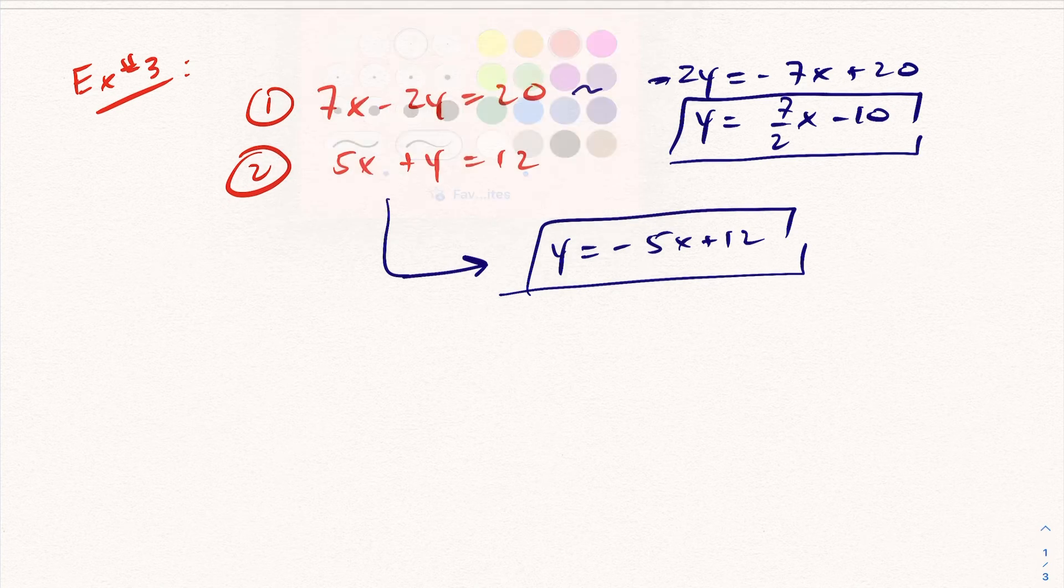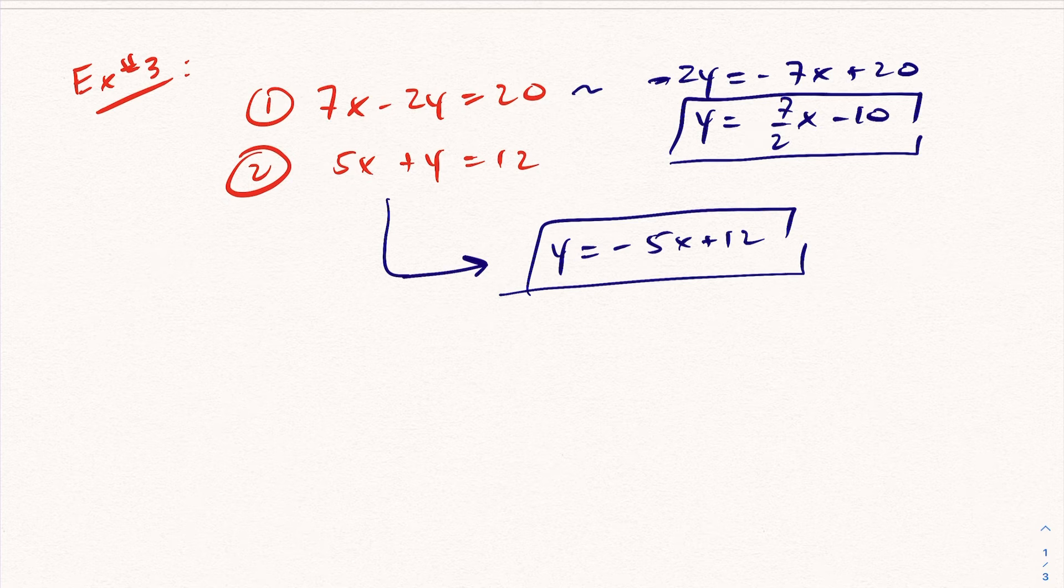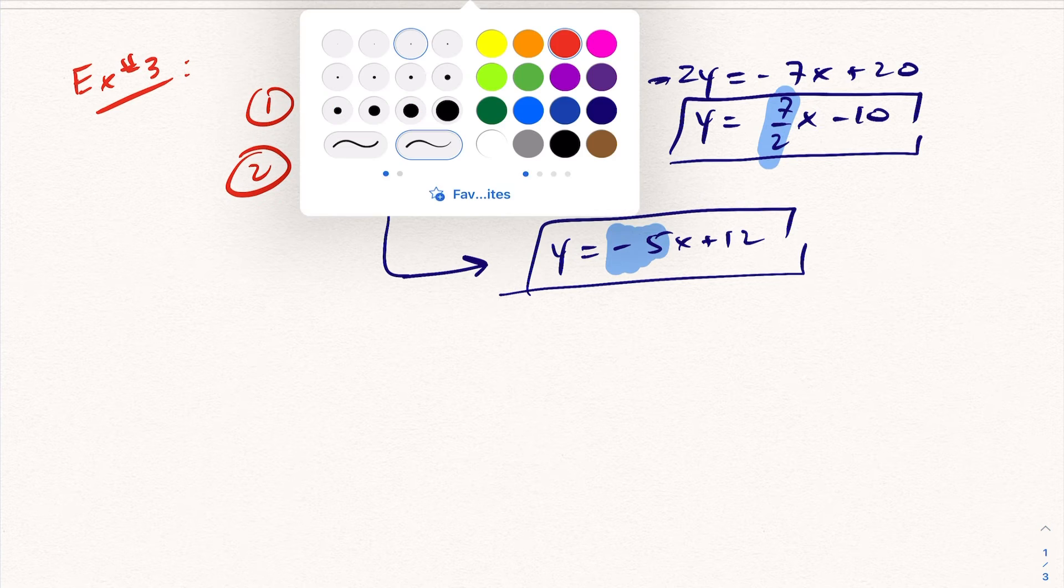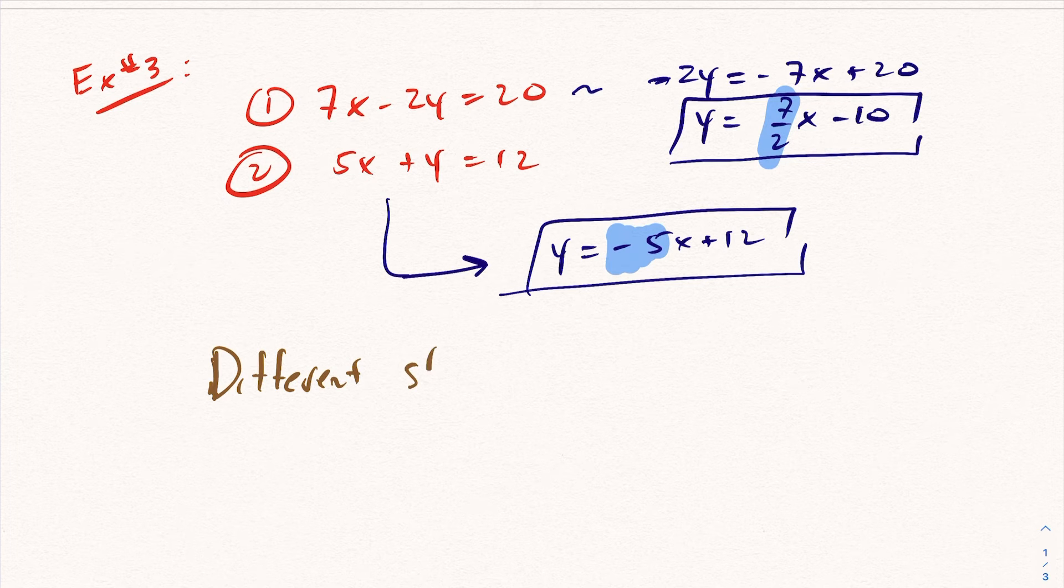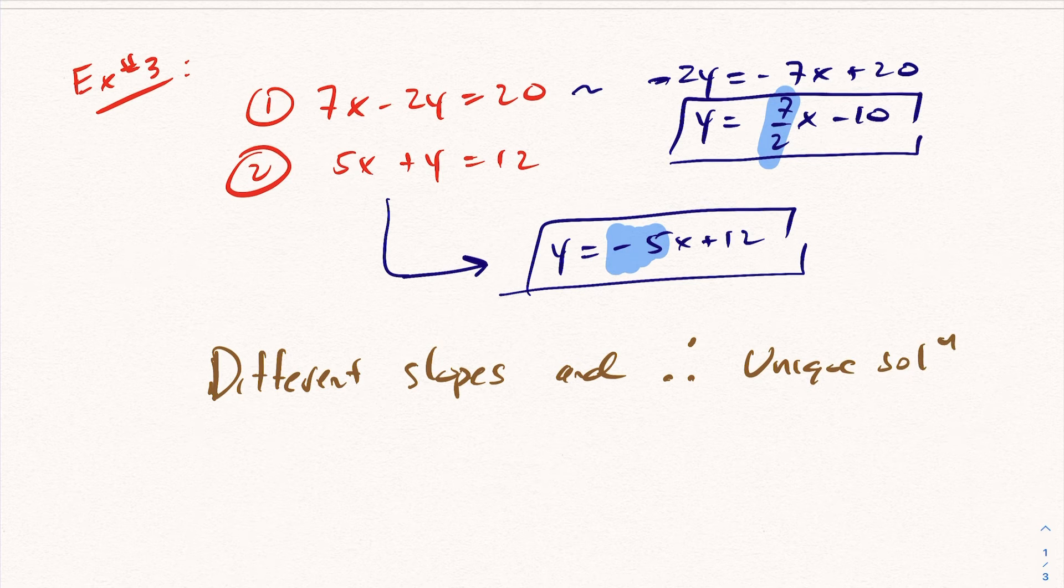So right away, as soon as I see this, with this equation here, one slope is 7 halves. The other slope is negative 5. As soon as you have that, you can say different slopes and, therefore, unique solution or exactly one solution.